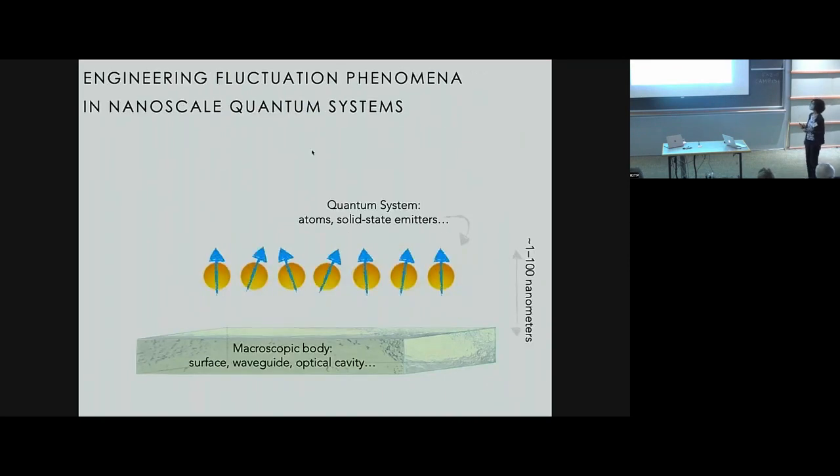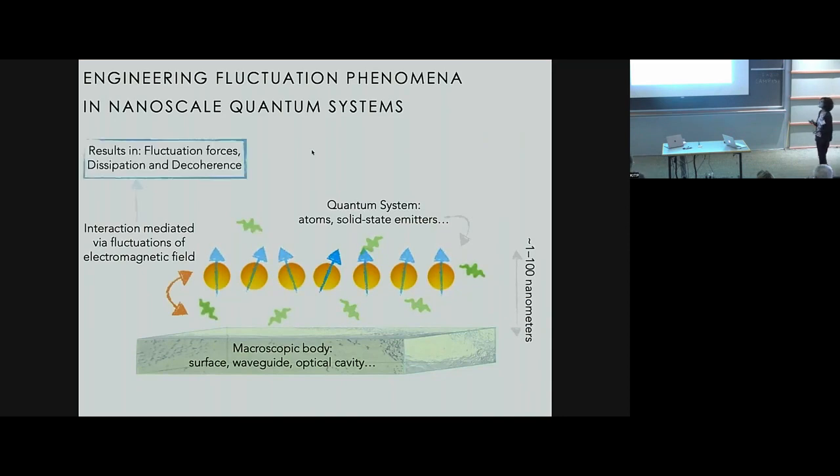What do I mean by engineering fluctuation phenomena in nanoscale quantum systems? So here's a typical looking quantum system where you have some atoms or solid state emitters that are in some nice quantum state at a distance of few to few hundreds of nanometers away from some microscopic body, which could be the surface of a chip or a waveguide or some resonator. And as these two objects interact via the quantum fluctuations of the electromagnetic field, we get all sorts of interesting fluctuation phenomena, forces, dissipation and decoherence of the quantum system that we would like to be able to control and engineer.